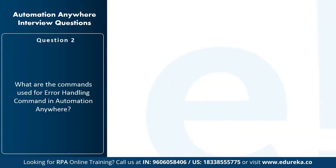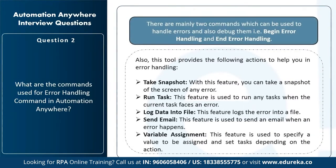Next question: what commands are used for error handling in Automation Anywhere? The two main commands are Begin Error Handling and End Error Handling. Within these, you can perform additional actions: Take Snapshot (capture a screenshot on error), Run Task (run another task when an error occurs), Log Data into File (log errors to a file), Send Email (send an email when an error happens), and Variable Assignment (specify and set a value depending on the action).